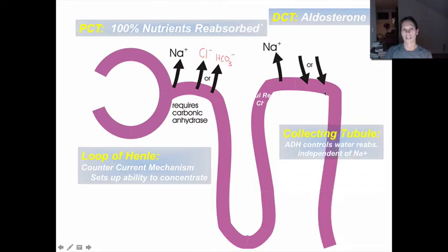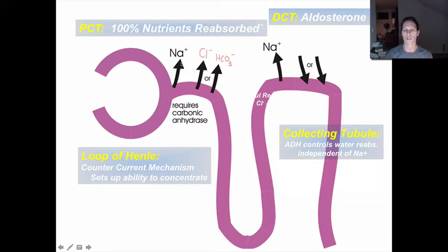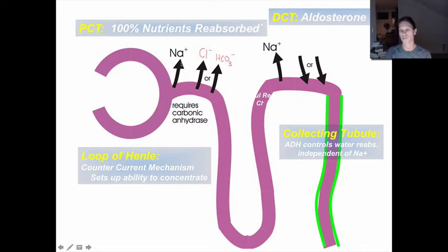At the collecting duct, antidiuretic hormone (ADH) from the pituitary gland acts. This is one of the only places in the renal tubule where water is transported independently of sodium. Everywhere else, water follows sodium, but in the collecting duct, water can be reabsorbed under the influence of ADH independently. When water is reabsorbed, it dilutes the blood and concentrates the urine.